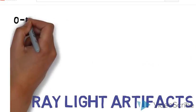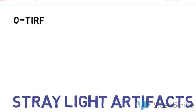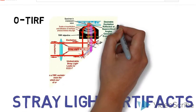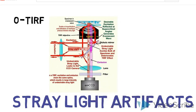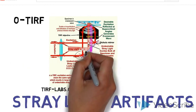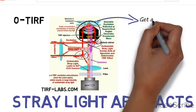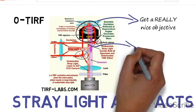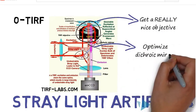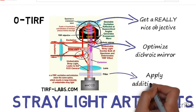O-TIRF, on the other hand, is more prone to stray light. The figure here identifies several sources in the O-TIRF setup that can contribute to significant stray light interference. This can be minimized by optimizing the optics, particularly the objective lens and the dichroic mirror. Additional filters can also help remove the excitation wavelength and scattering.